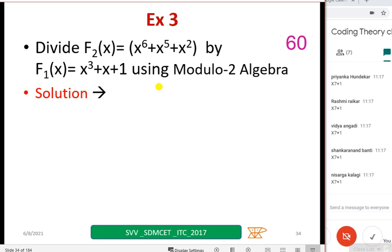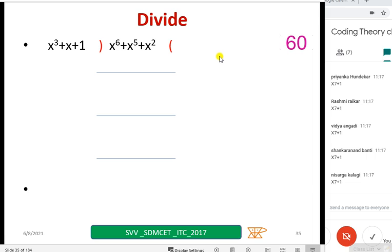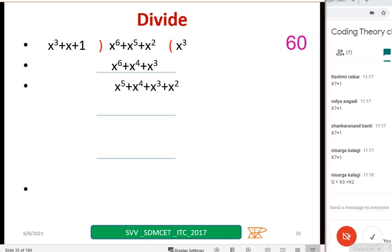Let us go to the next. Divide x raised to 6, x raised to 5, x raised to square. Here, F2 of x is there, and F1 of x is x cube plus x plus 1. You have to divide, but you have to use modulo 2 algebra. You can write down the quotient and remainder in the chat box.